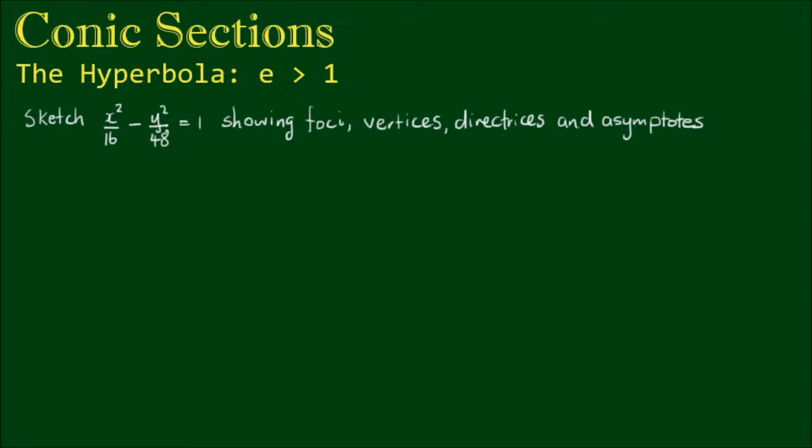So in this video, let's put all of that knowledge into practice by sketching the equation x² on 16 minus y² on 48 equals 1, showing the foci, vertices, directrices and the asymptotes.